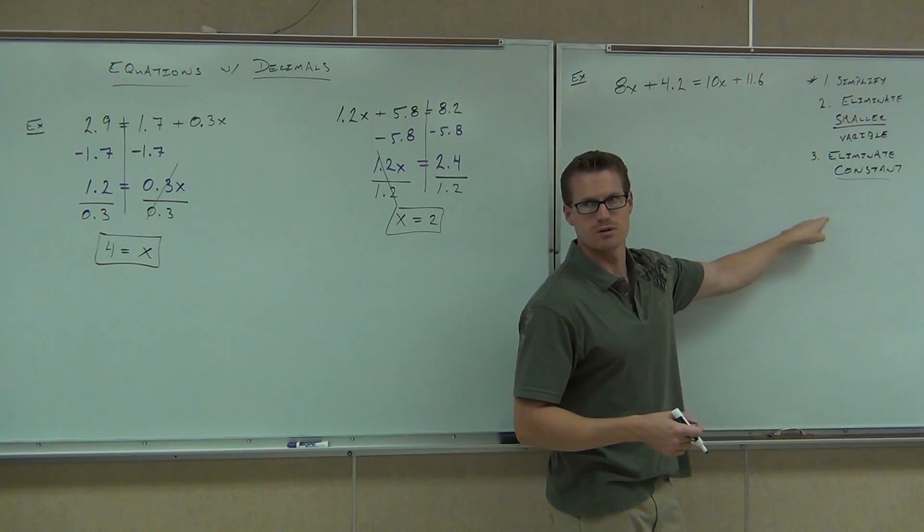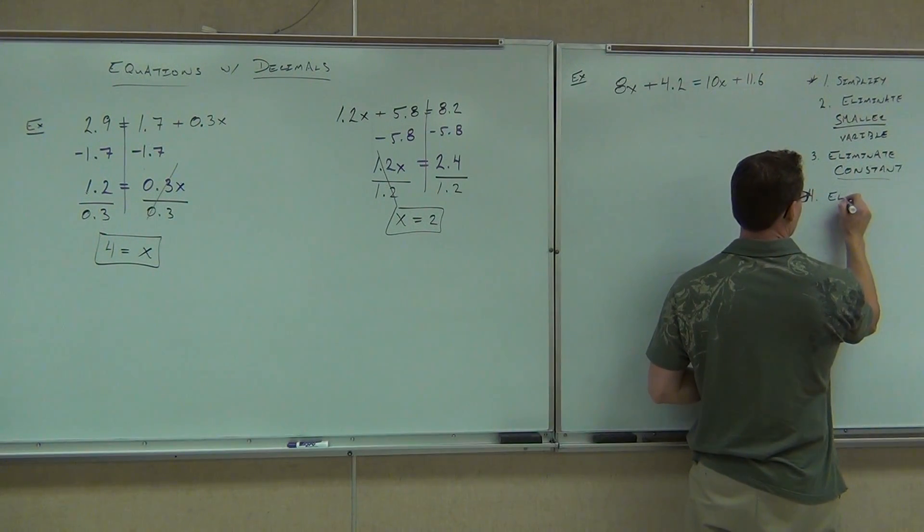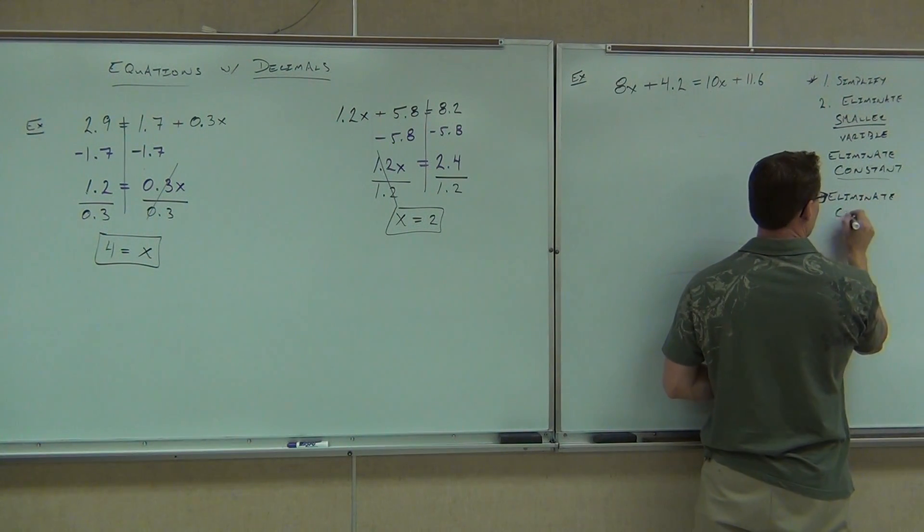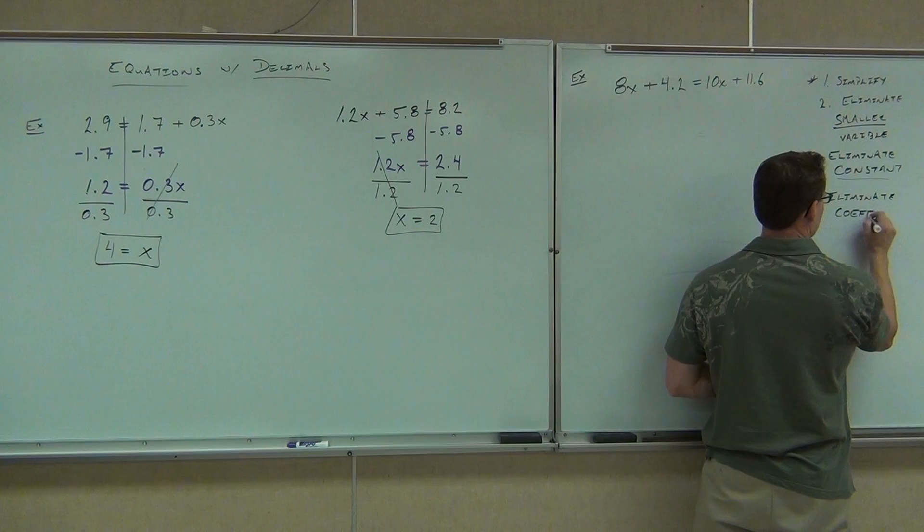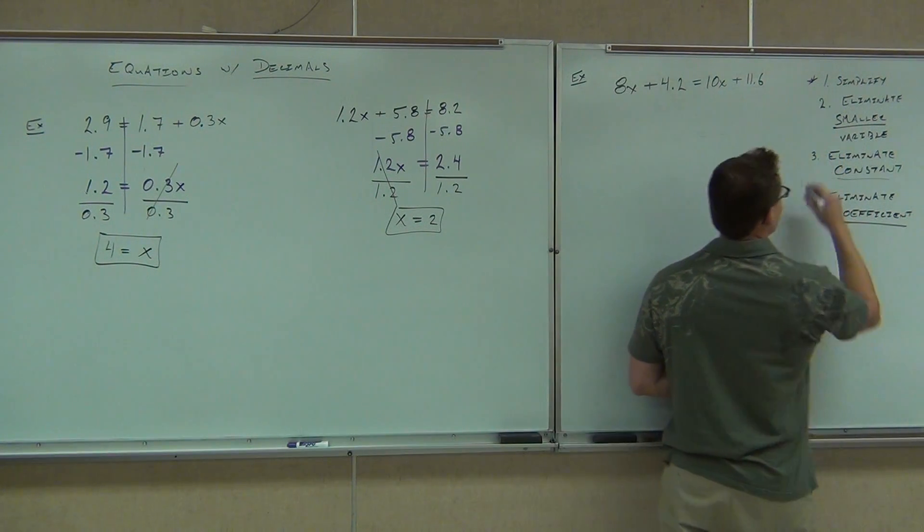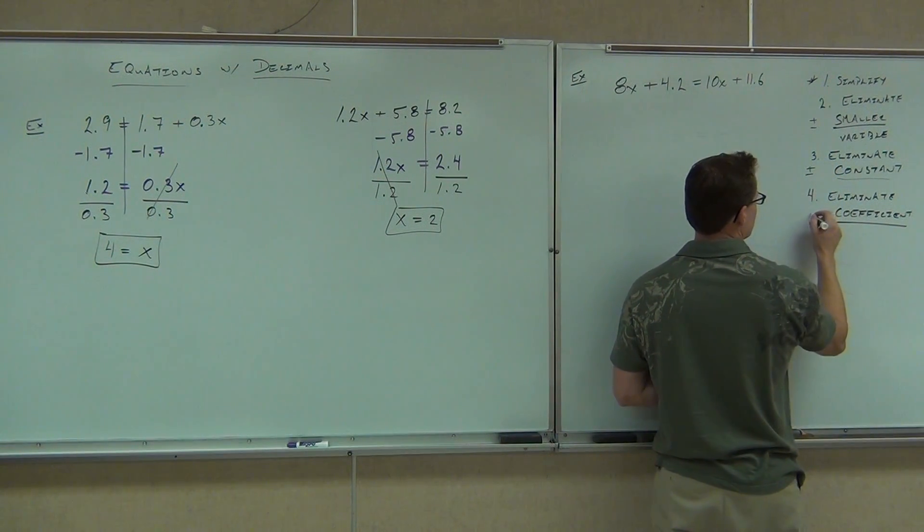The last step is to get rid of the coefficient by dividing. So this is a plus-minus step. This is a plus-minus step. This is a division step.